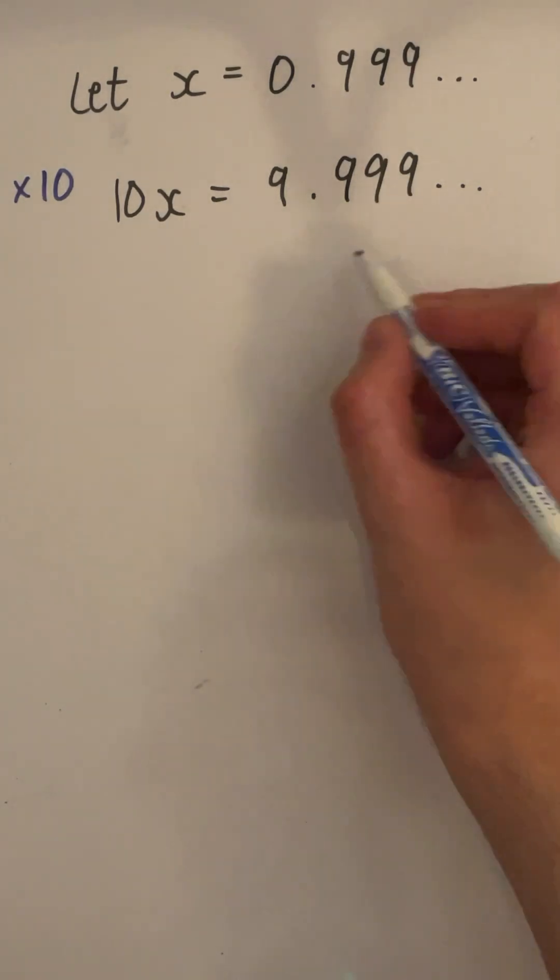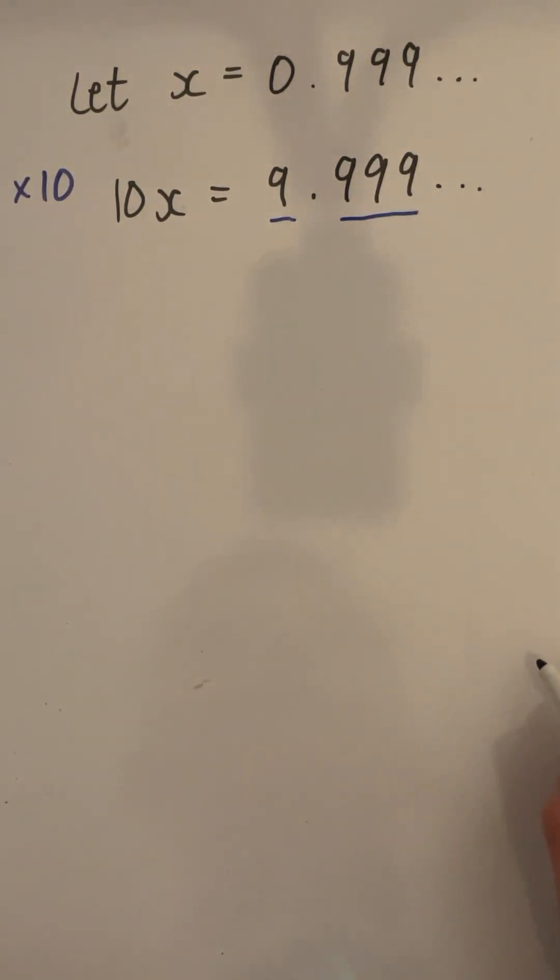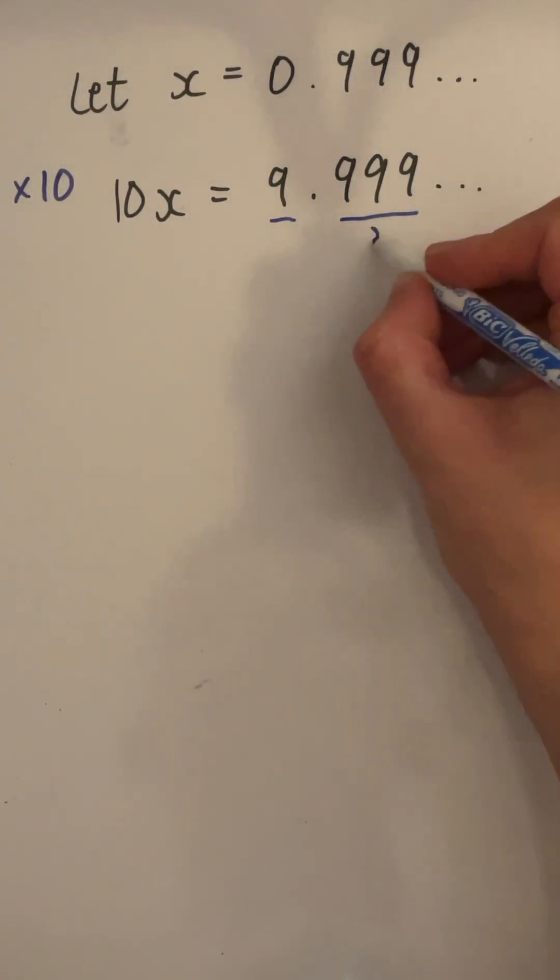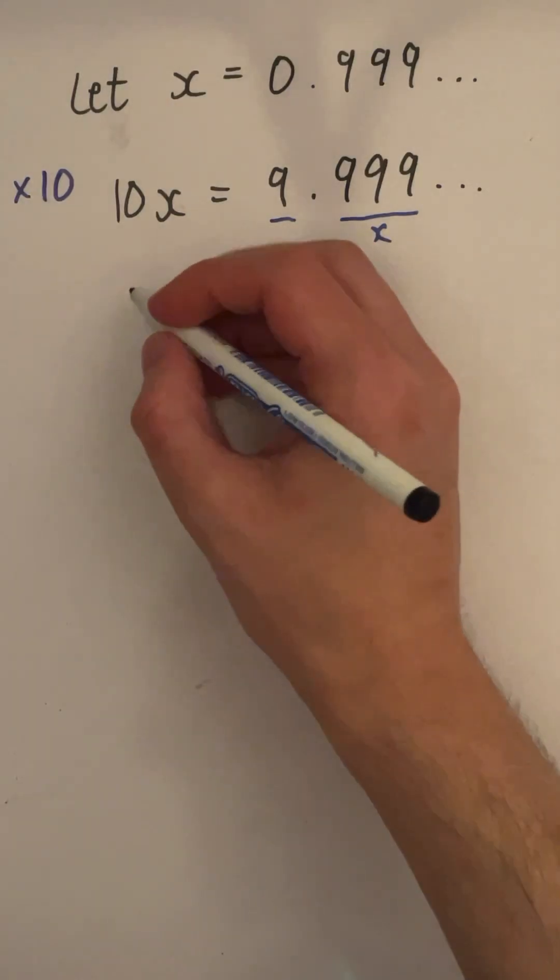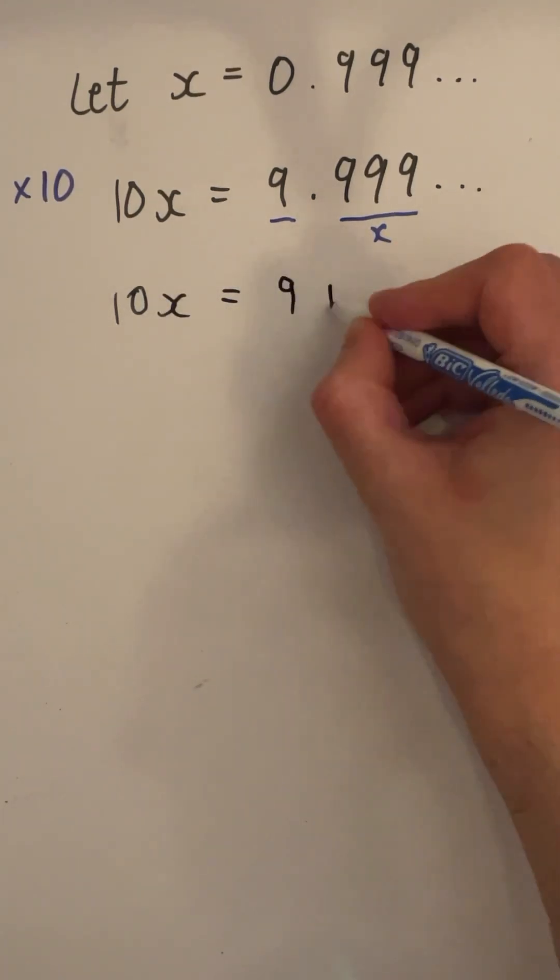Notice this right hand side is simply 9 and 0.999 recurring. Well, this 0.999 recurring is just x. So we have 10x is equal to 9 plus x.